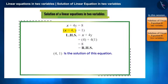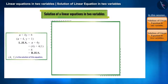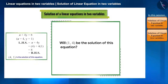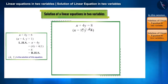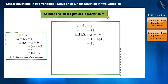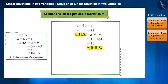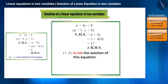Here, in the parenthesis, the first value is of x and the second is of y. Will 1 comma 4 also be a solution of this equation? No. Because keeping the value of x as 1 and y as 4, the value of the equation becomes 17, which is not equal to 8. RHS is not equal to LHS. Hence, 1 comma 4 is not a solution to this equation.